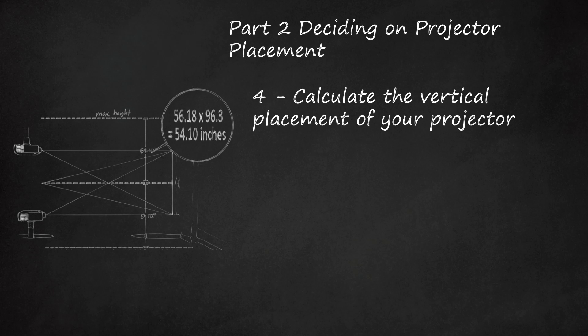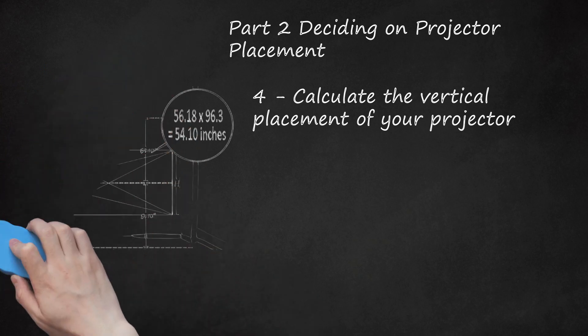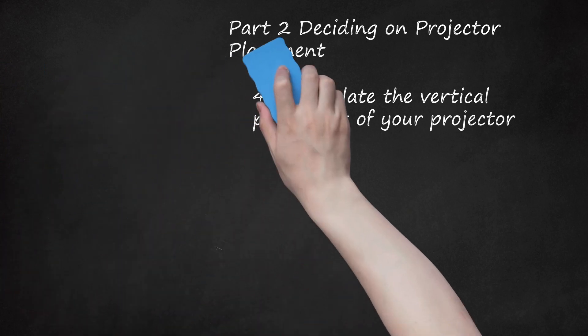To calculate a vertical offset for a 56.18 inch screen: 56.18 inches (height) × 96.3% offset—if your calculator doesn't have a percent symbol, use 0.963—equals 54.10 inches. This means that the projector can be positioned anywhere from 54.10 inches below the center of your screen to 54.10 inches above the center of your screen.